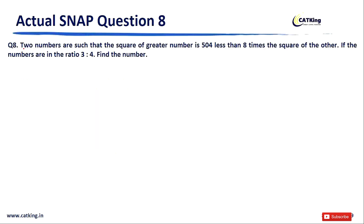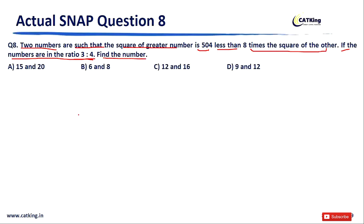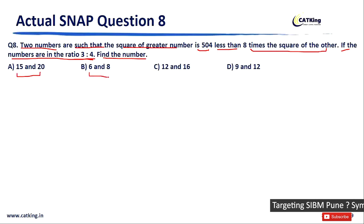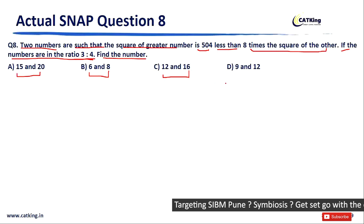Question number 8: Two numbers are such that the square of the greater number is 504 less than 8 times the square of the other. If the numbers are in the ratio 3:4, find the numbers. Options: A) 15 and 20, B) 6 and 8, C) 12 and 16, D) 9 and 12.